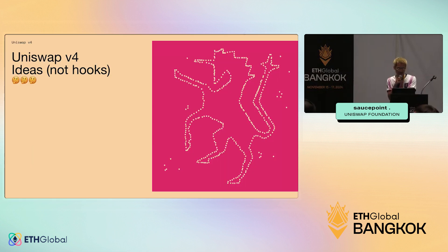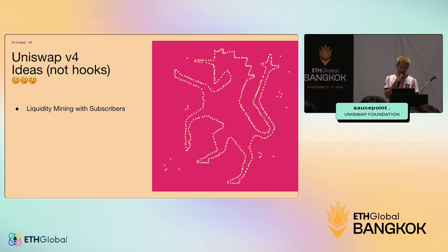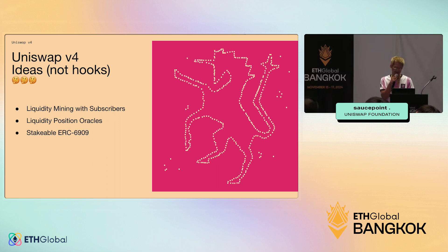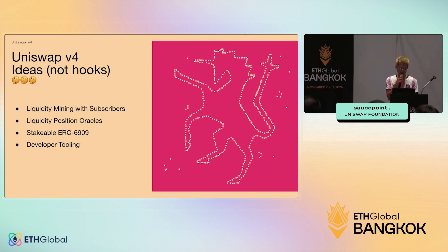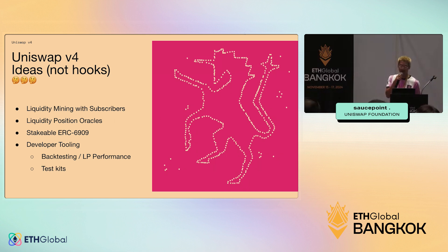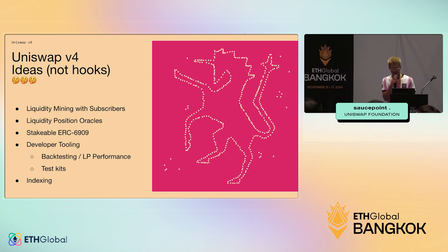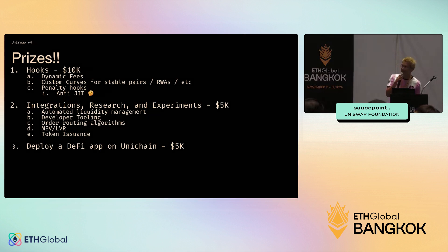For v4 more broadly, our prizes aren't just hooks — there's also liquidity mining with subscribers, which is a new feature different from v3. There are ideas around creating oracles for liquidity positions, which don't really exist yet. Building staking mechanisms for ERC-6909 tokens minted by the core contracts would also be neat. Developer tooling — testing kits, backtesting LP performance — and indexing, like setting up a Ponder schema, are also great ideas.